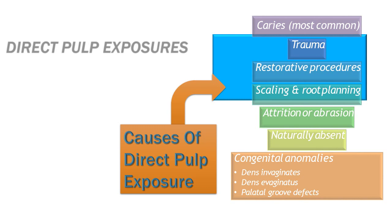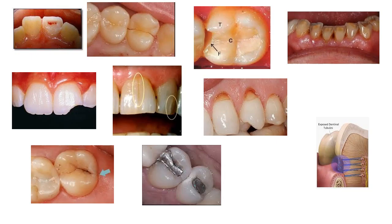Direct pulp exposure can be caused by caries, trauma, restorative procedures, scaling, root planing — because those will affect the cementum — attrition, abrasion, naturally absent enamel, and congenital anomalies.